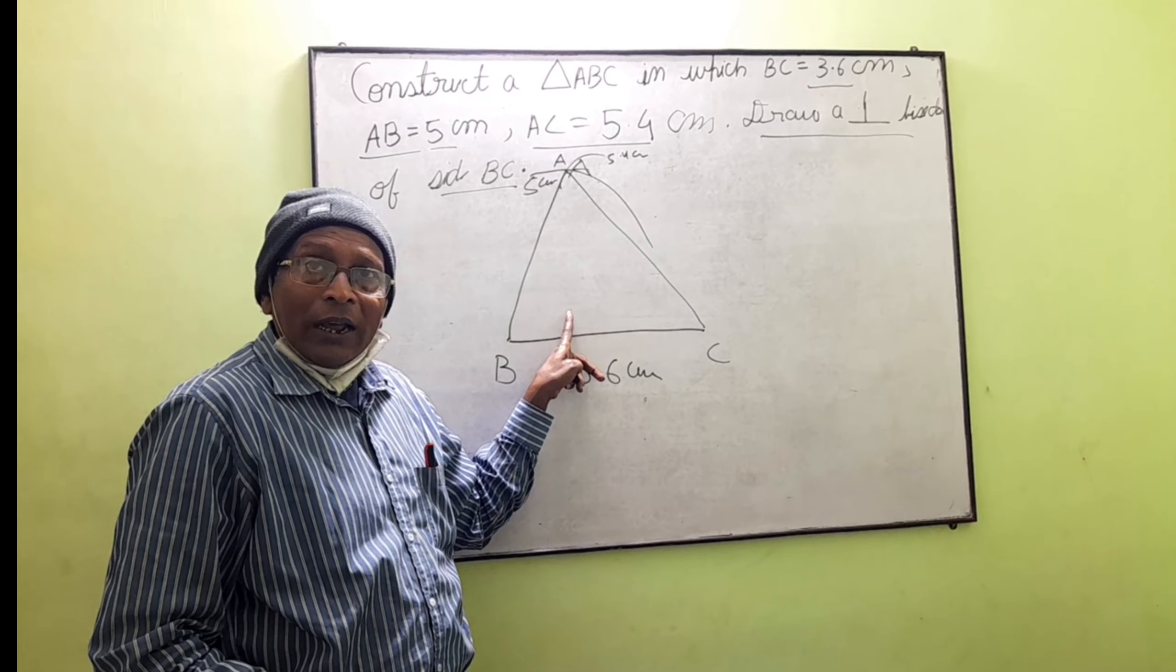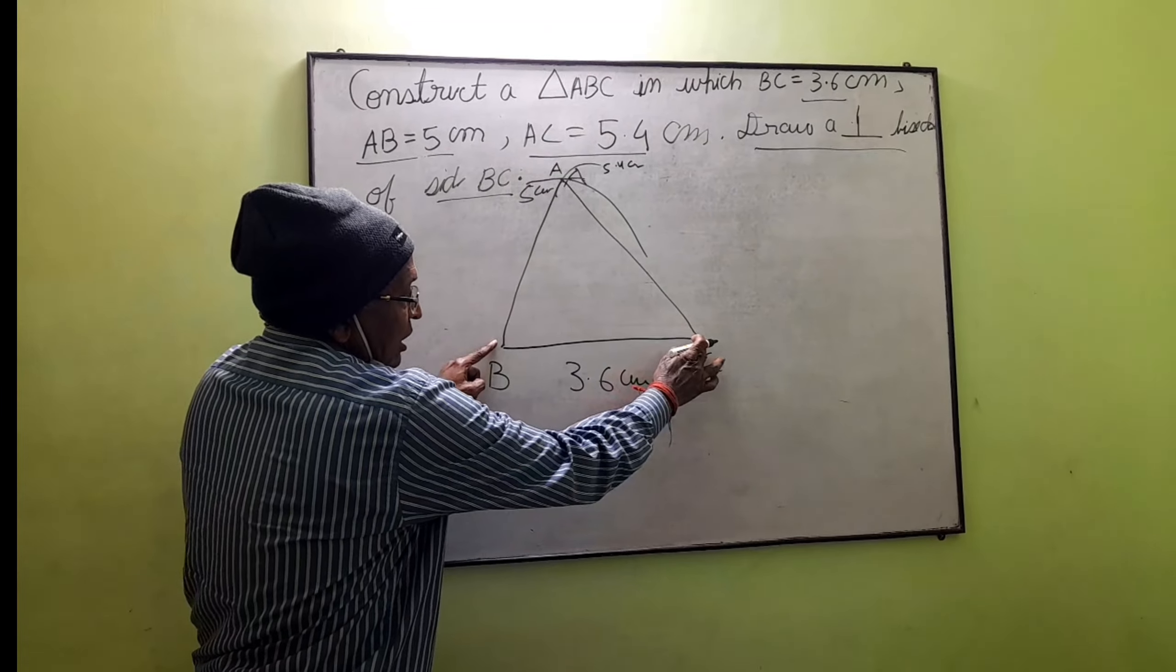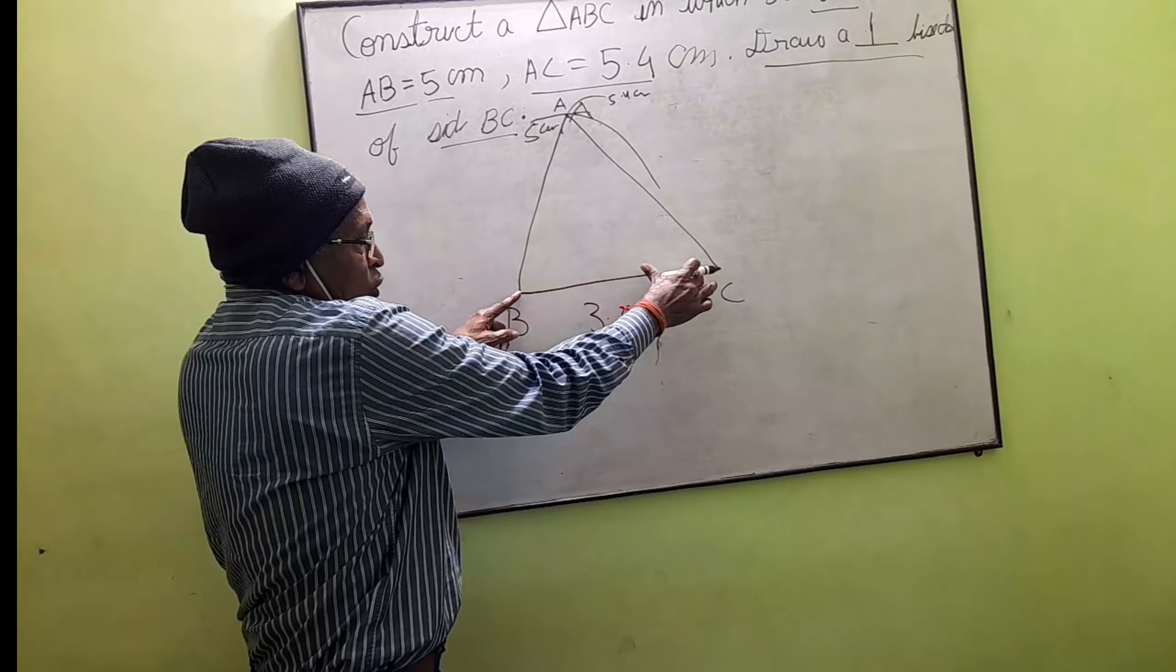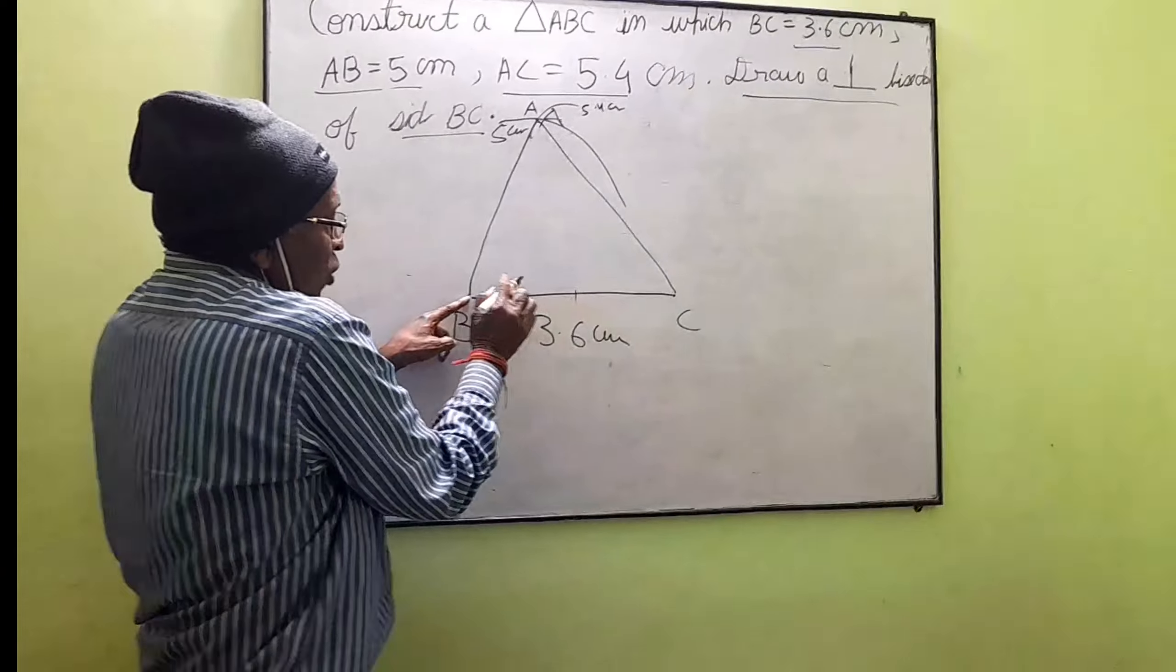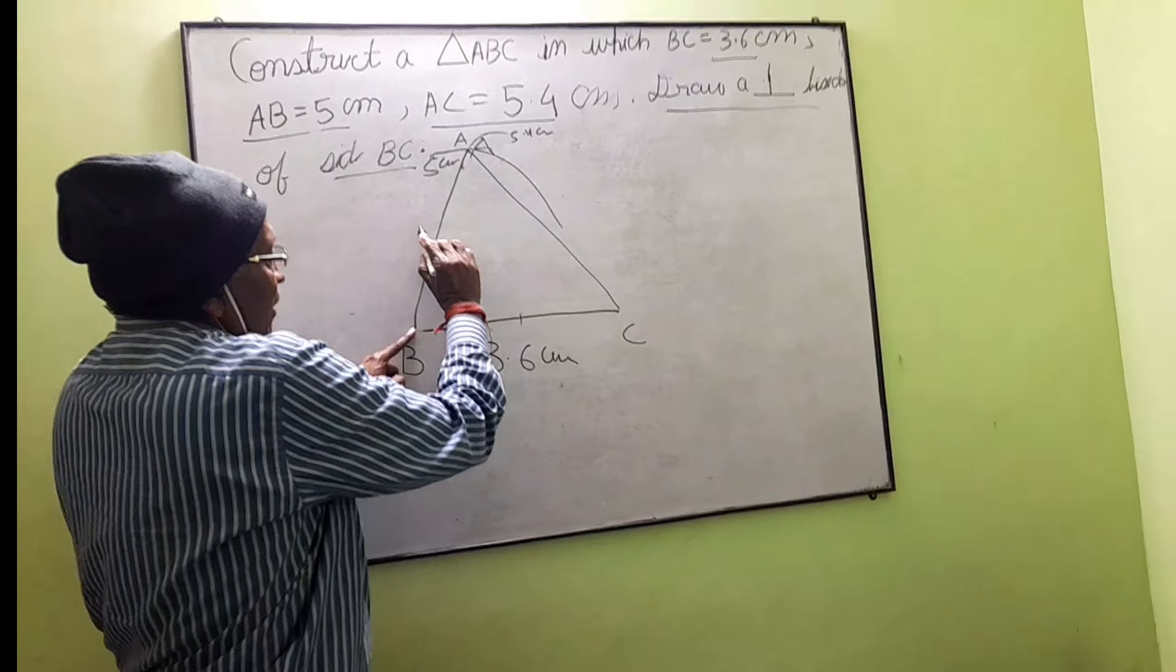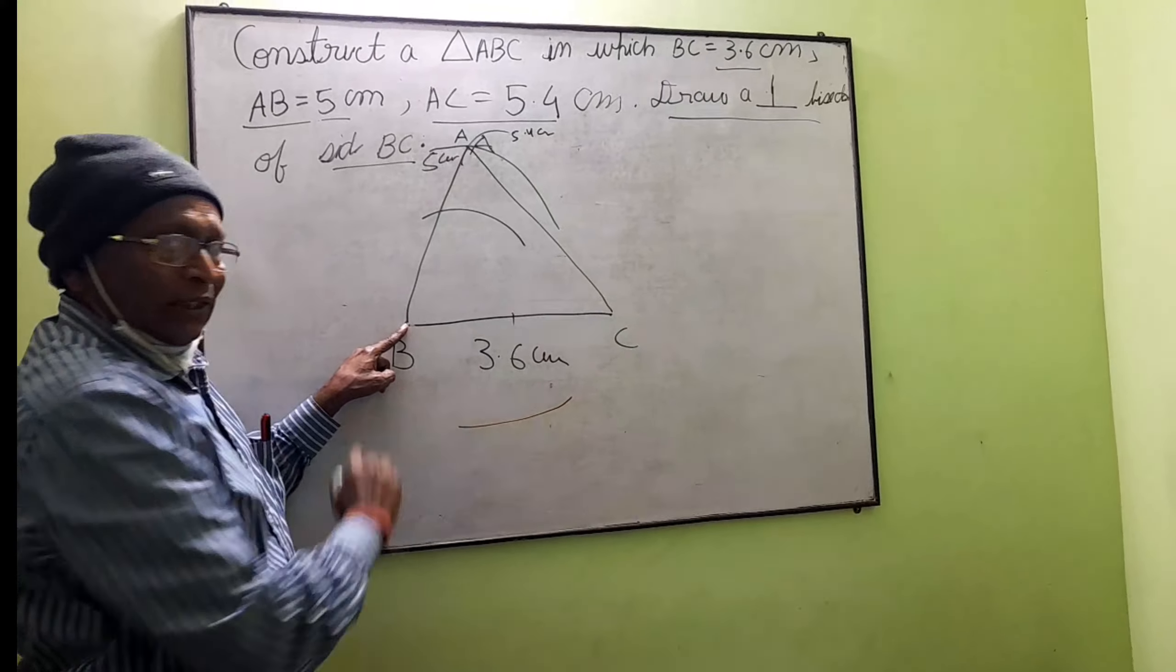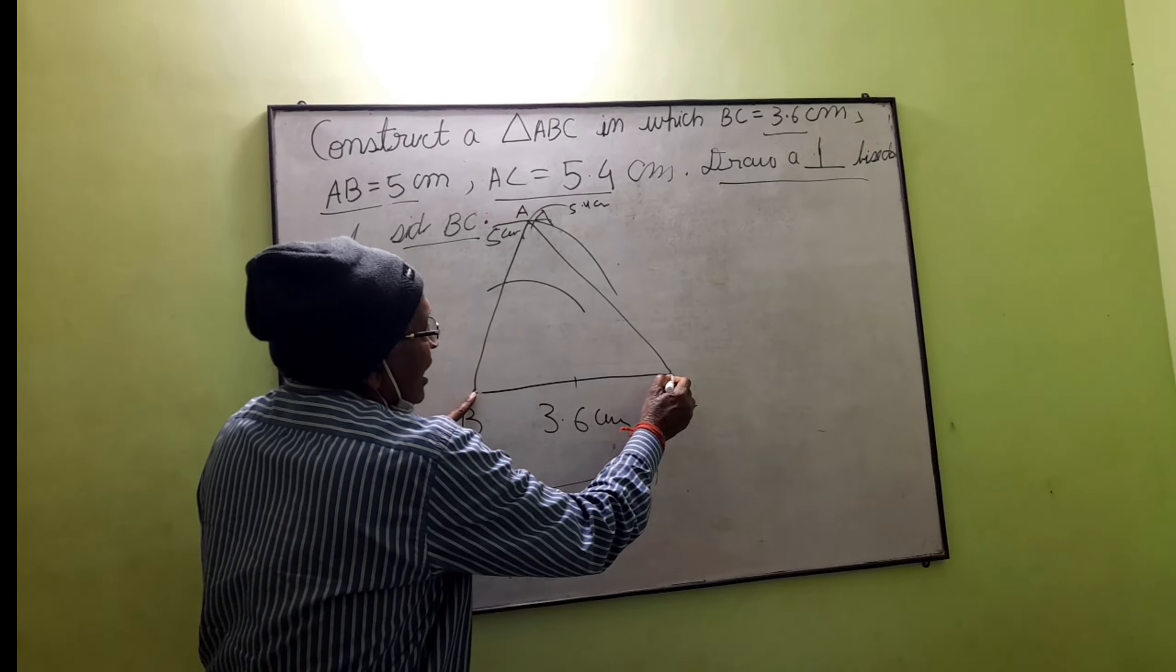You will take more than half of BC. Draw an arc above BC and below BC. Then, making C as the center with the same radius, you will draw another arc above BC and below BC.